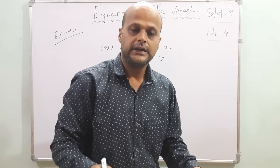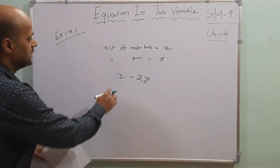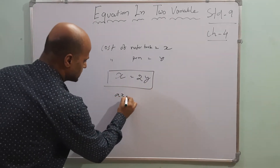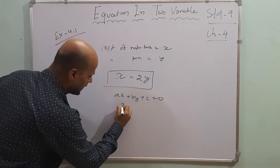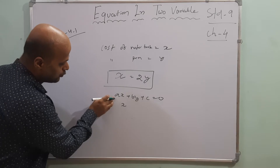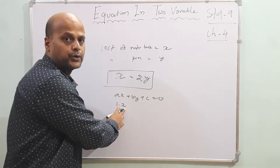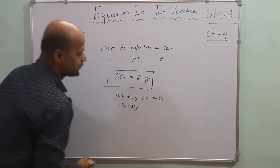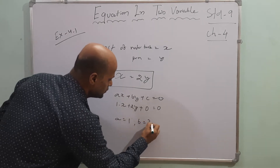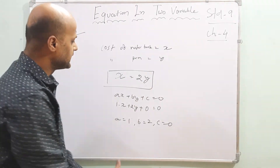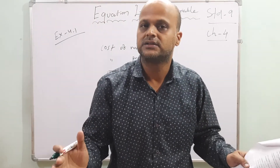The equation formed is x equals 2y. Writing this in the standard form ax plus by plus c equals 0: x minus 2y plus 0 equals 0, giving us 1x minus 2y plus 0 equals 0. Here a equals 1, b equals minus 2, and c equals 0. This is how we write a word statement as an equation in two variables.